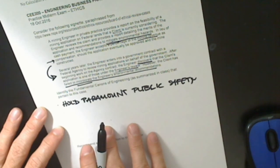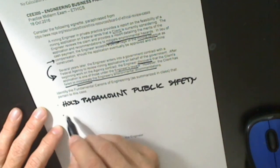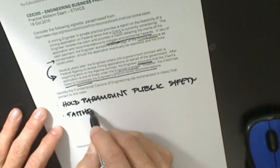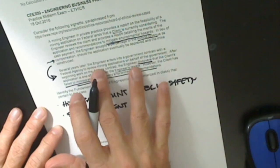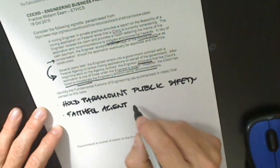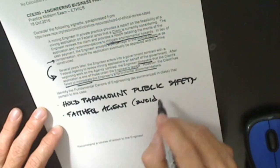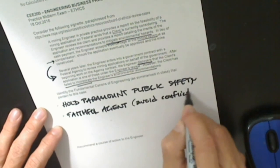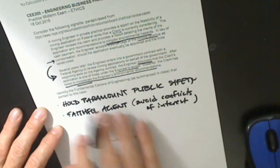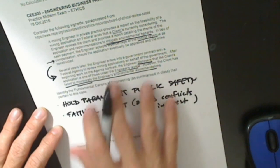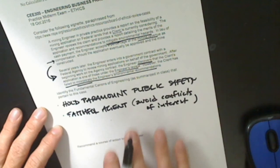Act for each employer or client as a faithful agent — which includes, especially in the American Society of Civil Engineers, avoiding conflicts of interest. How can the engineer act as a faithful agent to both the private client and the new client, the federal government? The obligation to act as a faithful agent to two different clients with opposing interests comes to bear. Also, because the engineer has a financial stake in the success of the mine and has been hired by the federal government to review the application, there is at least the appearance of a conflict of interest that should be avoided. So the faithful agent canon definitely applies.